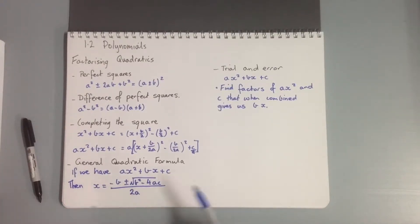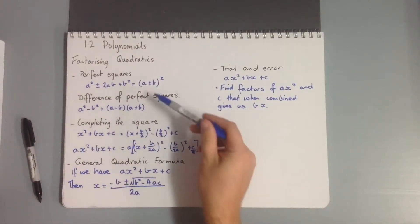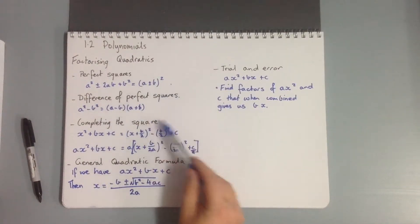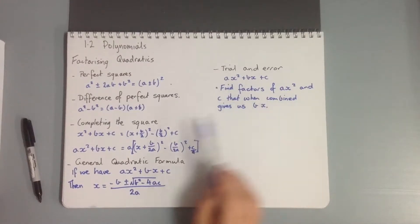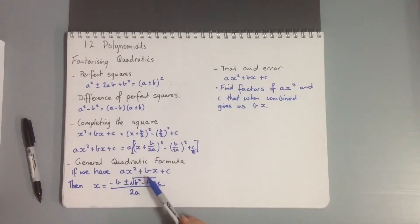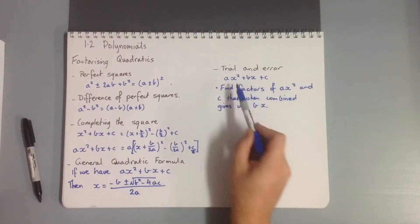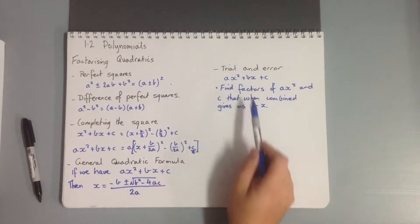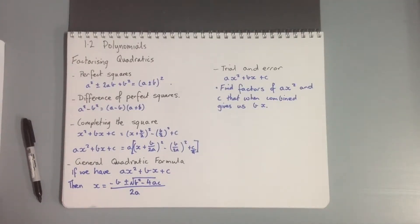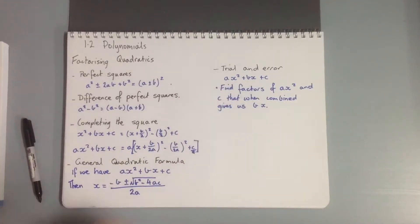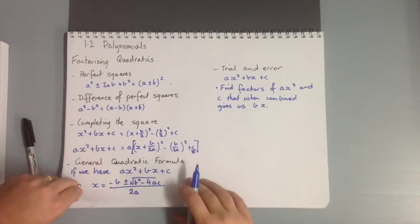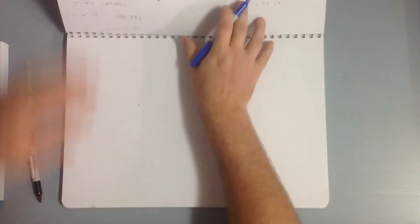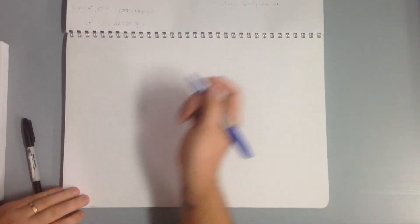The other method — which we always try first before going to completing the square or the general quadratic formula — is trial and error. We're trying to find factors of our ax² term and our c term that when combined will give us our middle term bx. We'll look at a worked example of this first.